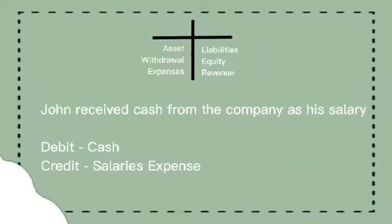John received cash from the company as his salary. In this transaction, John Smith received his salary from the company. That's why cash is on the debit side, because the company gave John his salary, and the salary expense is in the credit side.